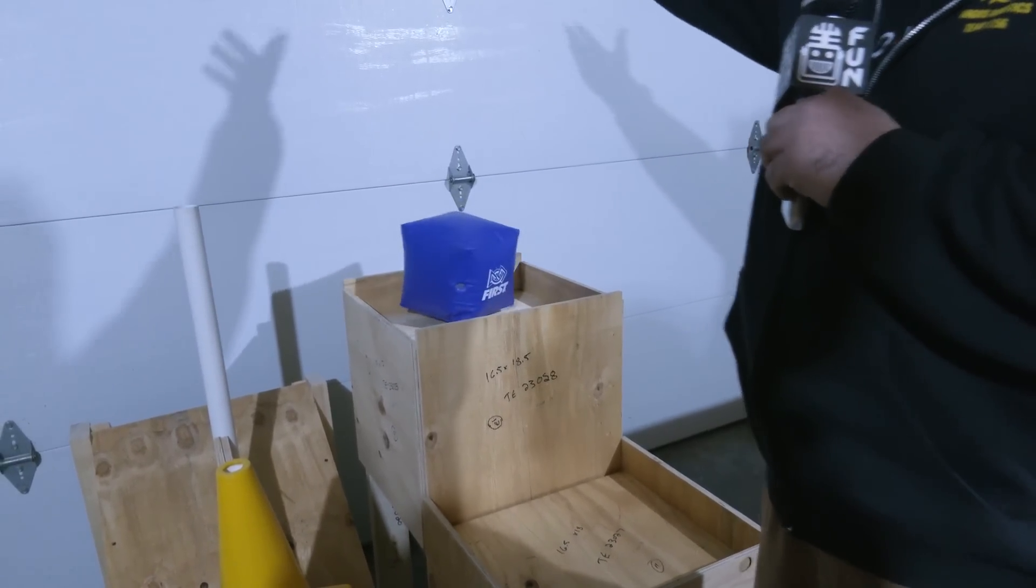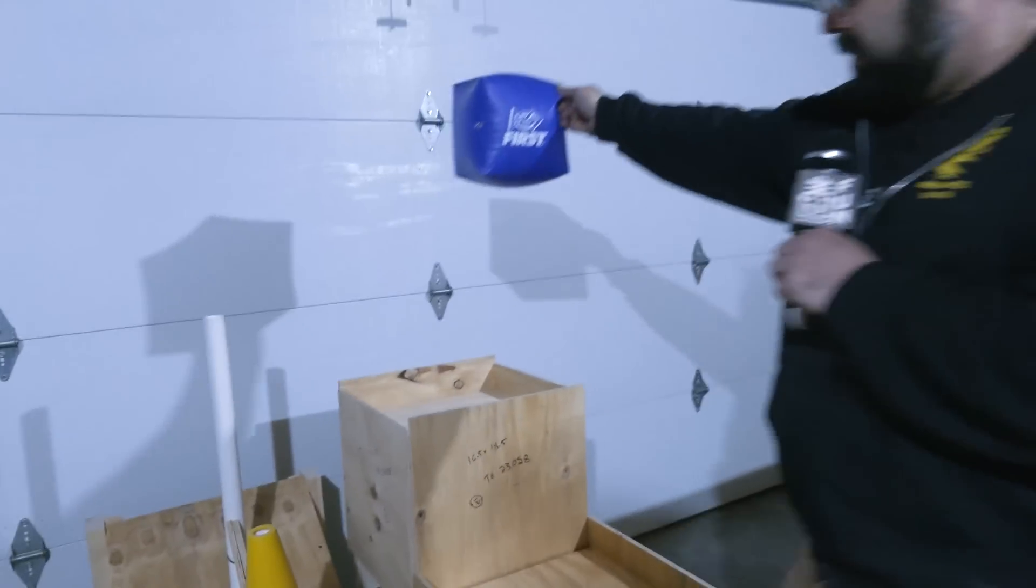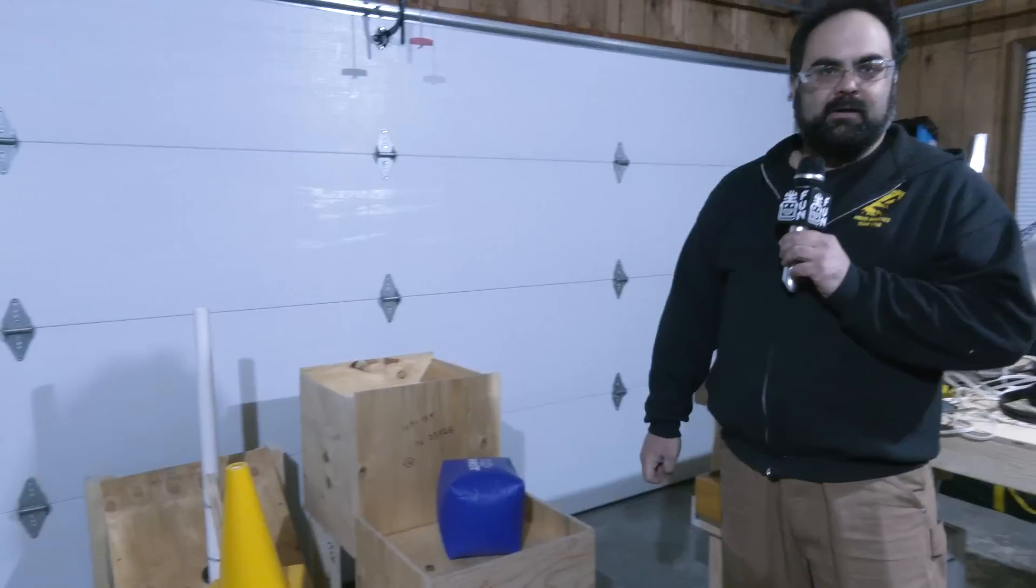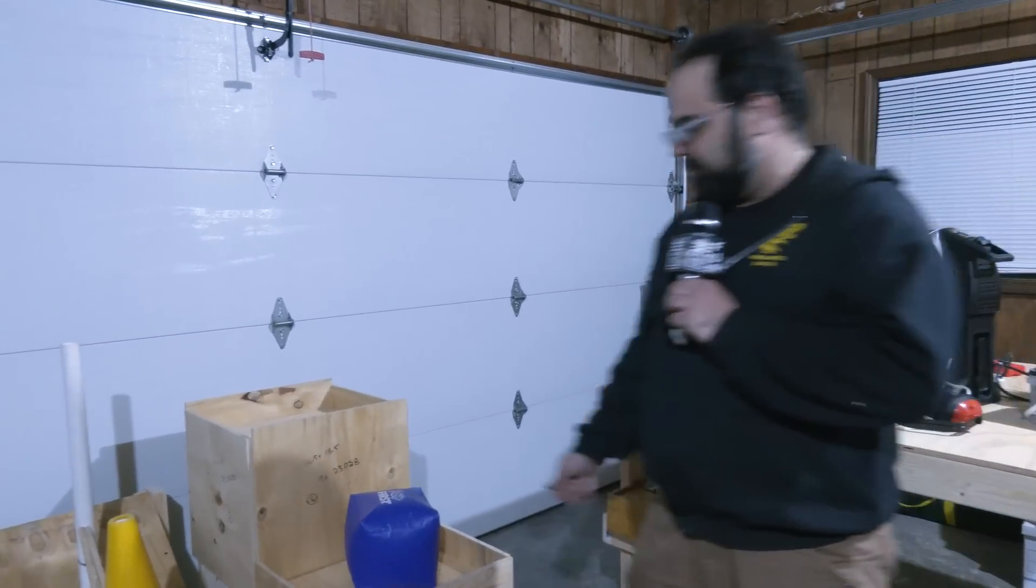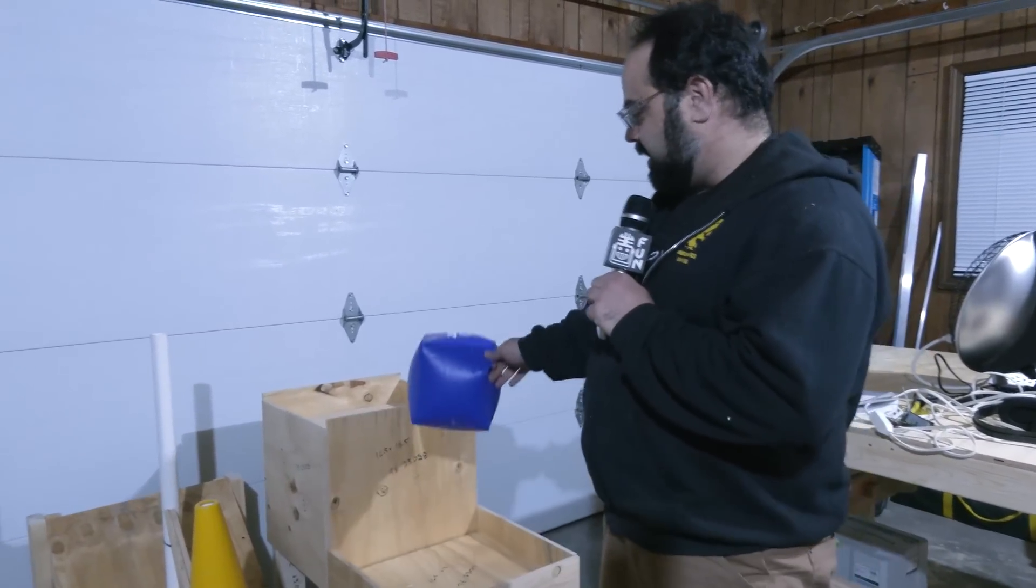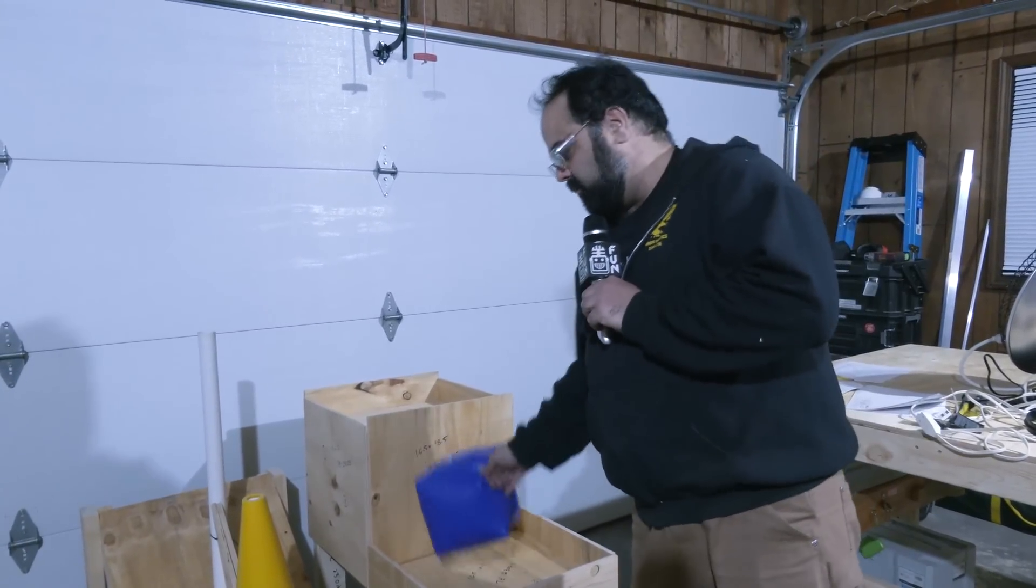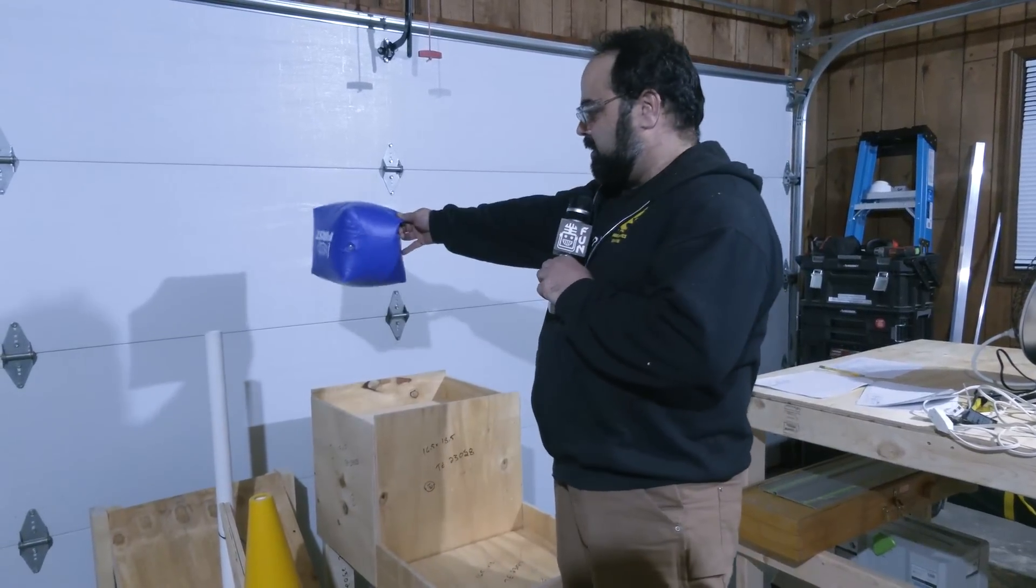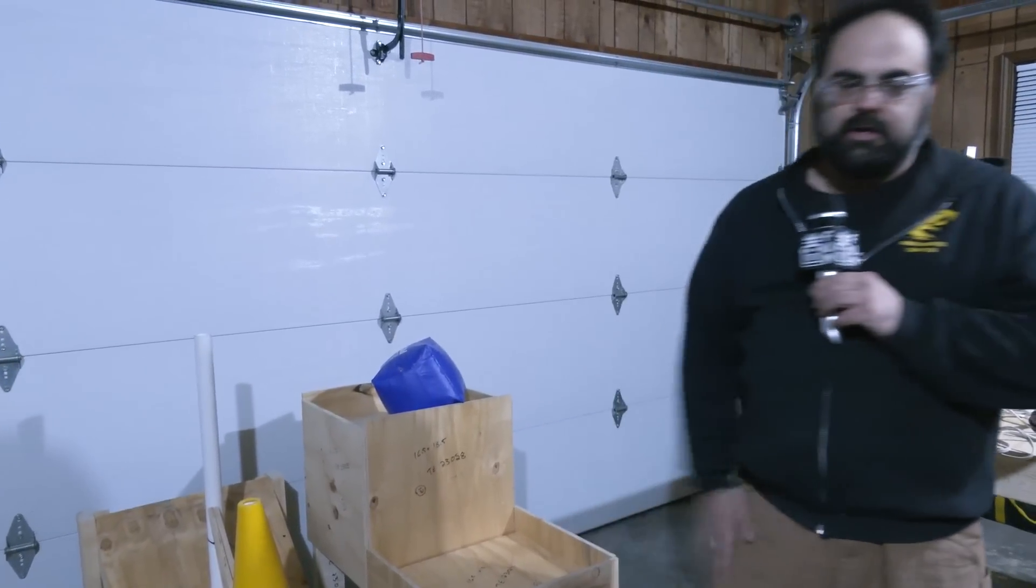You may want to control the height that you drop from here. Roughly that same five feet basically makes sense there. But if you're on the edge, you do get some bounce out of these. So that may be something you want to think about and try to adjust the height that you drop from a little bit more controlled than just letting it go from the full human player station height.